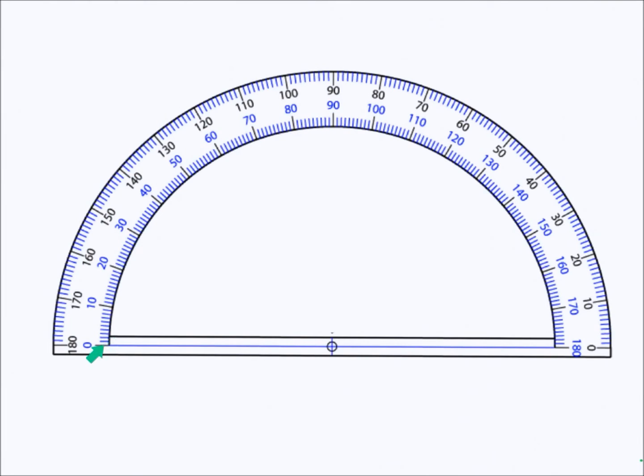If we look on the left hand side we also see that it starts at 0, 10, 20, 30, 40, 50, 60, 70, 80, 90 and goes all the way to 180 as well. Whether we use the outer or the inner scale for measuring will be determined by which way the angle is facing.